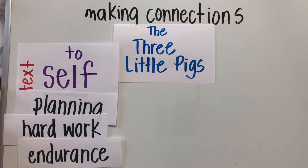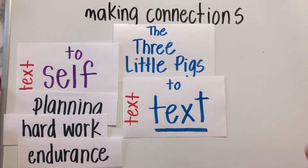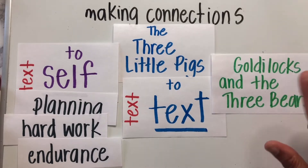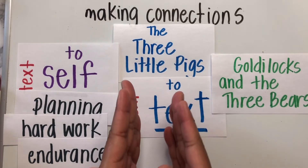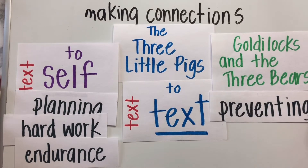I can make a text-to-text connection as well with the story Goldilocks and the Three Bears. Goldilocks finds a just-right meal in the three bears' house. I can compare it to The Three Little Pigs because one of the pigs in the story made a just-right house that prevented the wolf from breaking in, compared to the other two little pigs' houses.